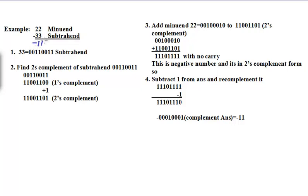First we have to consider 22 as the minuend and 33 as the subtrahend. As per step one, we take 33 as the subtrahend and write it in binary form: 33 is 0011 0011, where 3 stands for 0011.